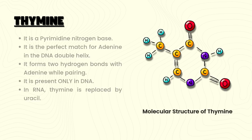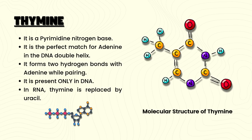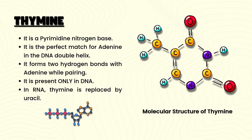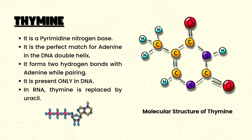Now let's go with thymine, which is spelled T-H-Y-M-I-N-E. It is a pyrimidine nitrogen base and is the perfect match for adenine in the DNA double helix. It forms two hydrogen bonds with adenine while pairing.